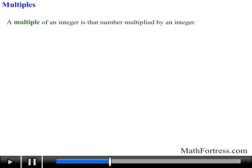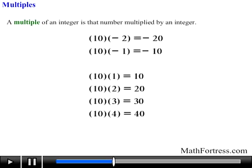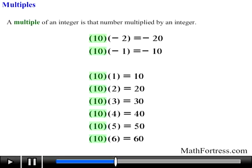Now let's focus on multiples. A multiple of an integer is that number multiplied by an integer. For example, the integers negative 20, negative 10, 10, 20, 30, 40, 50, and 60 are all multiples of 10, since each of those numbers can be obtained by taking 10 and multiplying it by an integer.